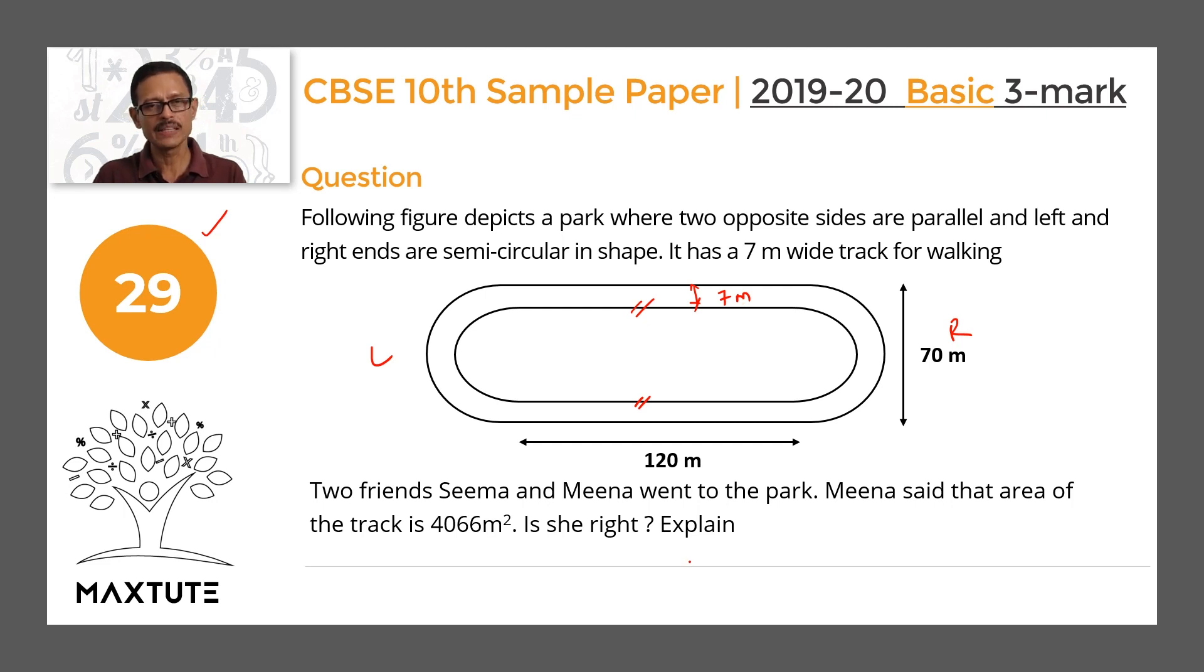Two friends Seema and Meena went to the park. Meena said that the area of the track is 4066m². The area of this walking track all around the park she claims it to be 4066m². Is she right? Explain. We need to compute the track, area of the track and find out whether our number matches with what she is claiming. Let's get started.